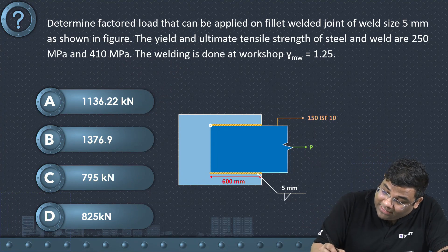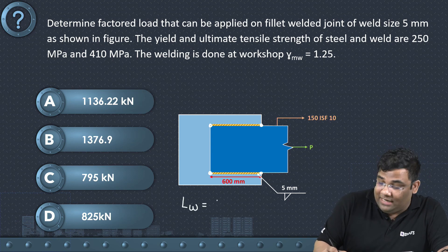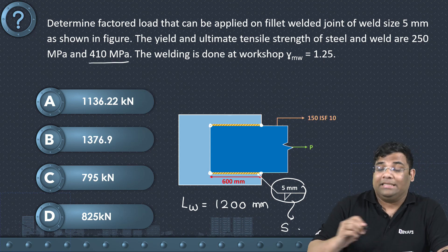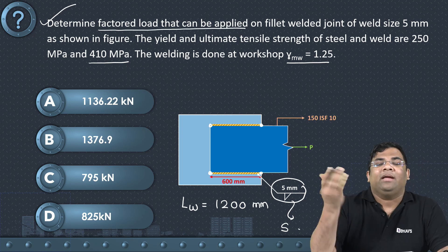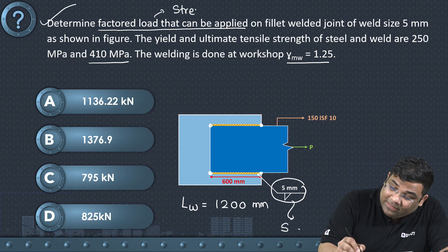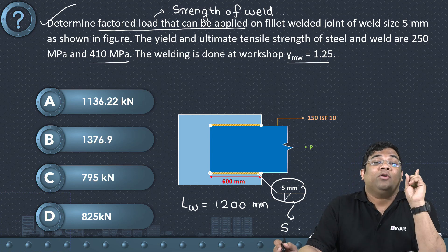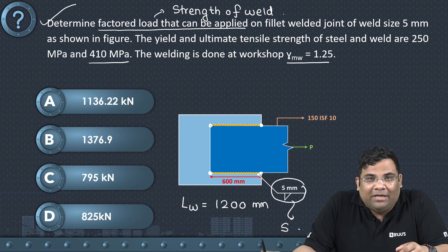For homework: welding is done only on two sides, so the total length of weld is 600 + 600 = 1200 mm. The size of weld, ultimate stress, and γmw are given. Find the factored load that can be applied — this equals the strength of the weld. In the previous question the strength was given and we found lw; here lw is given and we find strength. Please solve and post the answer in the comments.